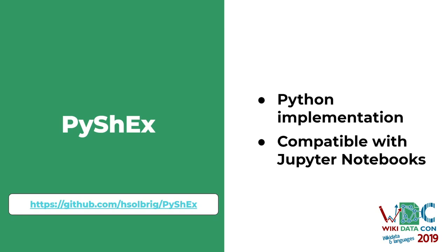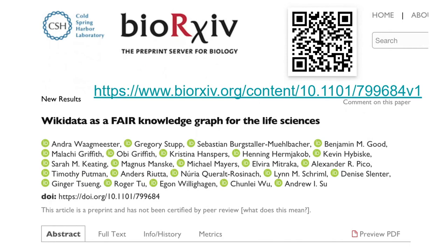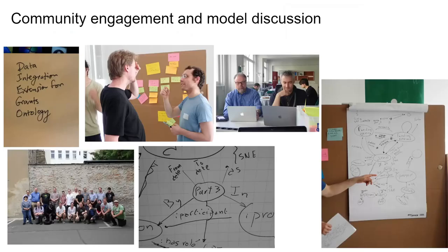I'm going to talk about a specific project called GeneWiki, where we are also dealing with quality issues. GeneWiki is trying to get biomedical public data into Wikidata, and we follow a specific pattern to get that data in. When we have a new repository or dataset eligible to be included, the first step is community engagement — not necessarily the Wikidata community, but the local research community. We meet in person or online and try to come up with a data model that bridges their data with the Wikidata model.